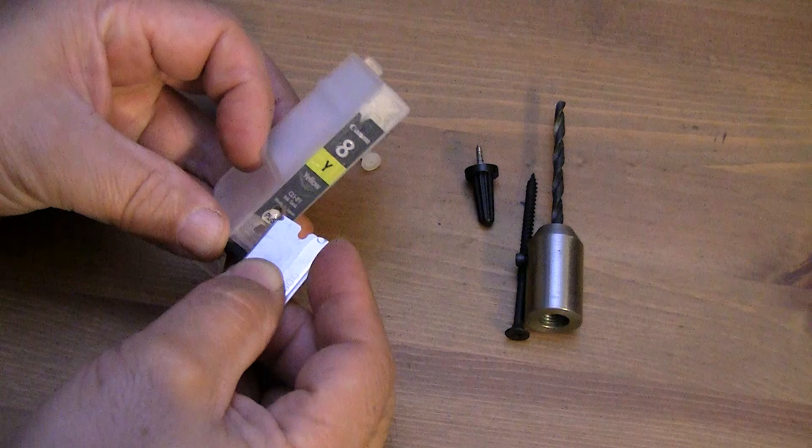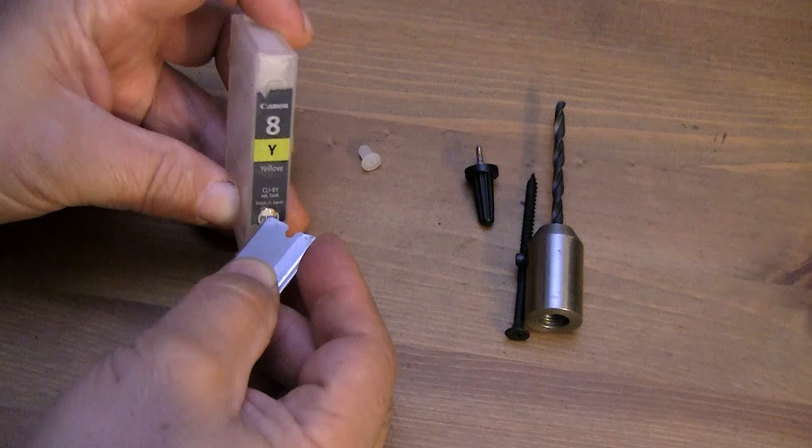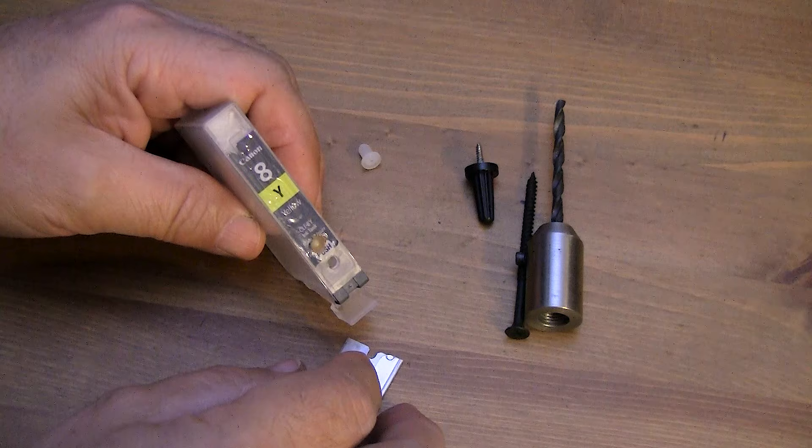As you can see I'm just simply tracing around that opening with a razor blade. You can use an exacto knife, a scalpel, whatever you happen to have on hand and we just pop it right off and there you go.